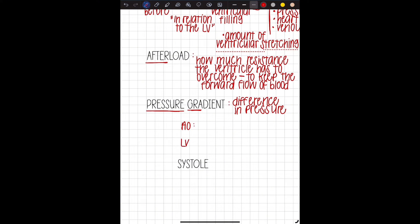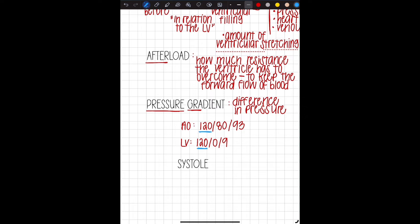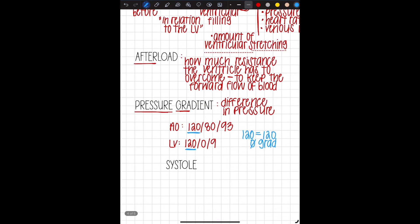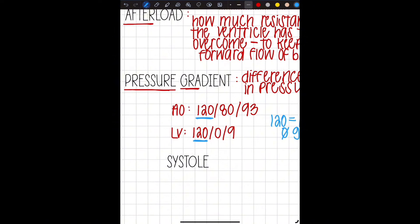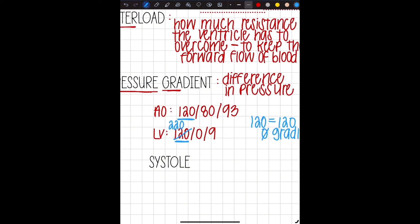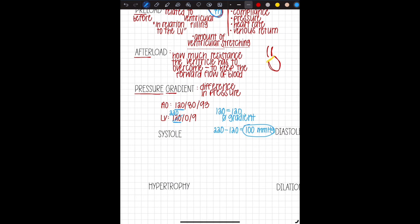So for instance, let's write AO and LV. So if AO is 120/80/93 and LV is 120/0/9, what would a pressure gradient look like? Right now, both of these systolic pressures are the same. They're equal to each other. 120 equals 120. There is no gradient there, but in the presence of aortic stenosis, like we talked about way up here, if it can't move forward, then this pressure is going to increase. So if my LV pressure is higher, let's just change this to 220 to be dramatic. What is my new pressure gradient? Is there a gradient? Yes. 220 minus 120 is 100 millimeters of mercury. So you have 100 millimeter of mercury peak to peak or systolic gradient.